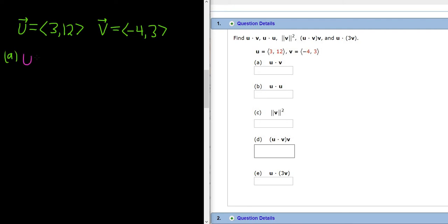So u dot v. All we do is we multiply the components and add. So 3 times negative 4, and then you put a plus sign, and then 12 times 3.